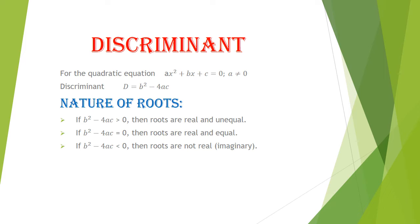If the value of discriminant b² minus 4ac is greater than 0, that is a positive value, then the roots of the equation are real and unequal. If the value of b² minus 4ac is equal to 0, then the roots of the equation are real and equal. If the value of b² minus 4ac is less than 0, it is a negative value, then the roots are not real — they are imaginary roots.